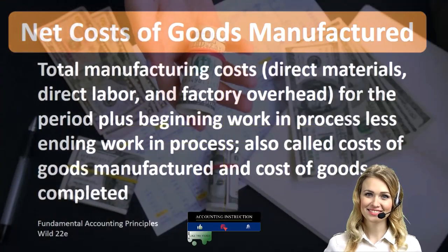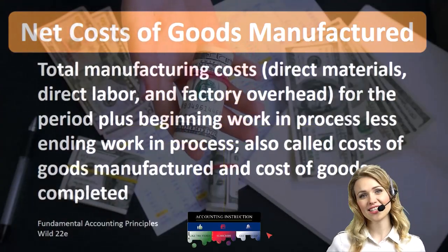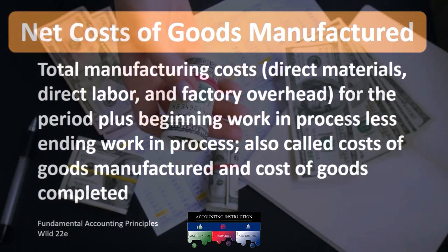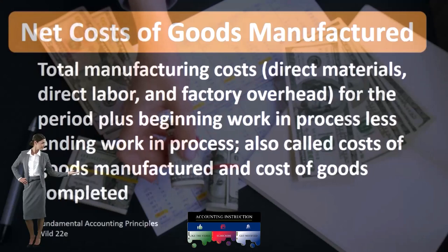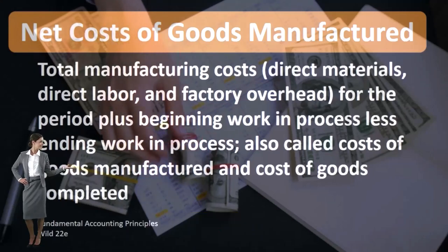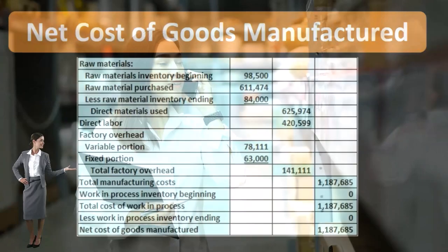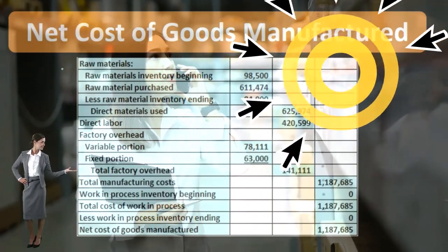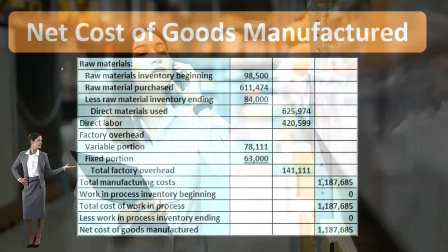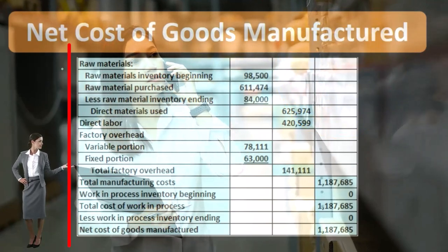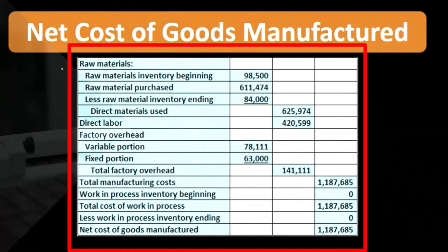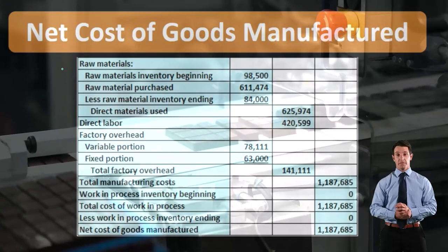When we're thinking about the cost of goods manufactured, we're thinking about a company that manufactures goods — a company that creates inventory from scratch or has a production process to create inventory.